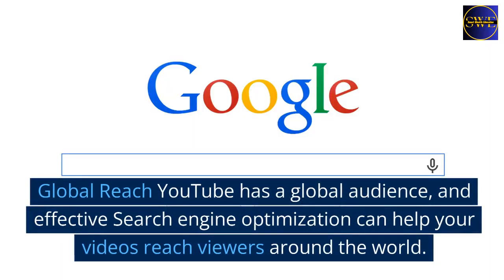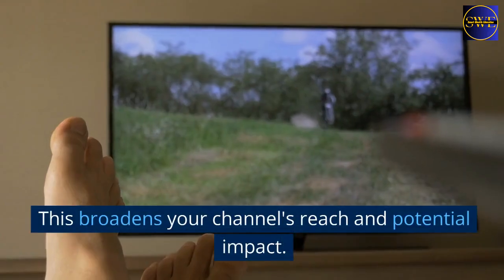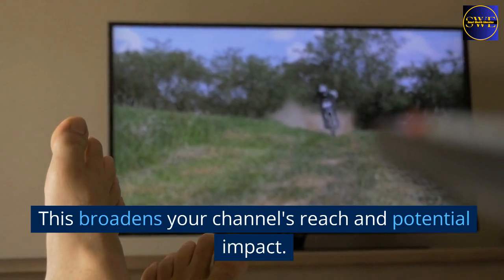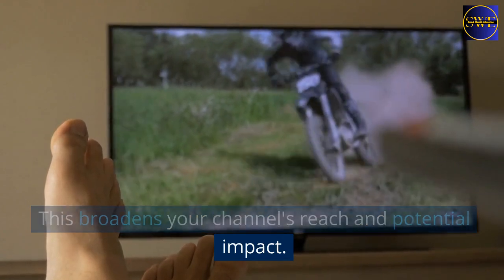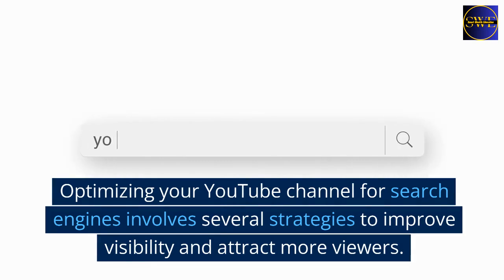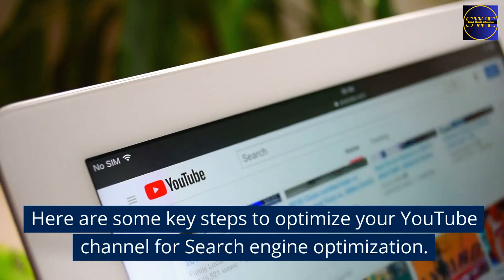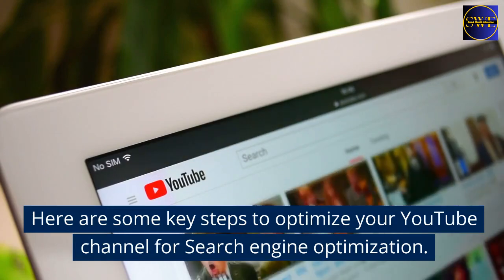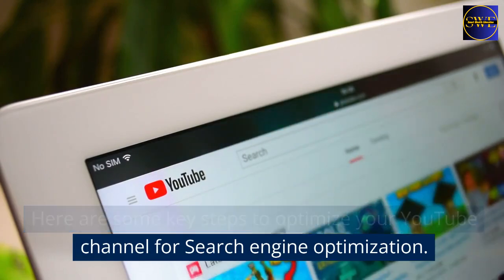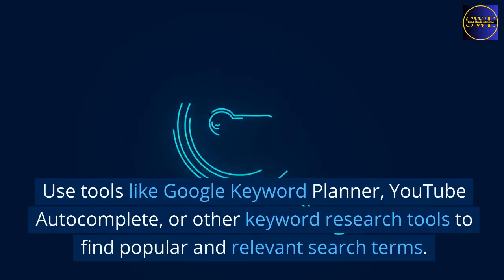Adaptable to trends: regularly updating and optimizing your content based on SEO trends and analytics allows you to stay relevant in your niche and adapt to changes in viewer behavior. Global reach: YouTube has a global audience, and effective SEO can help your videos reach viewers around the world, broadening your channel's reach and potential impact. Optimizing your YouTube channel for search engines involves several strategies to improve visibility and attract more viewers. Here are some key steps to optimize your YouTube channel for SEO.